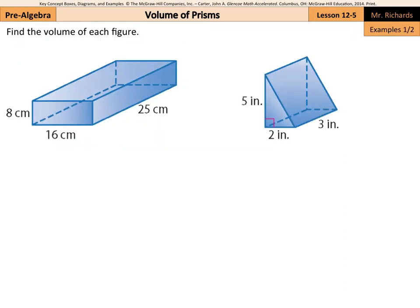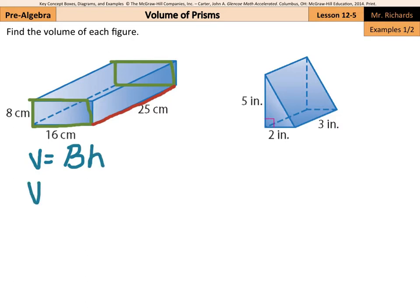So now we're going to find the volume of each figure. In our first figure here, we have the rectangular base that is 8 by 16, and these are connected then by a height of 25. So our formula is volume equals the area of the base, capital B, times height. So volume is going to equal our base as a rectangle — the way we find that area is length times width — and then the height of the prism. So now we can substitute in: volume is going to equal 8 times 16 times the height of the prism, which is 25.